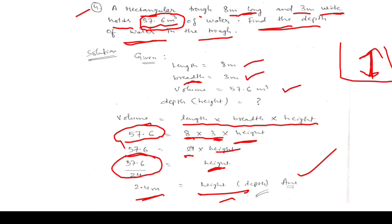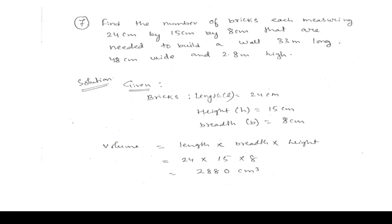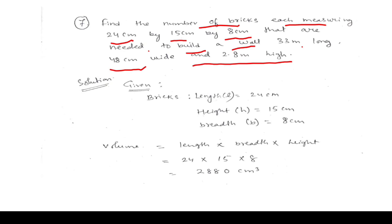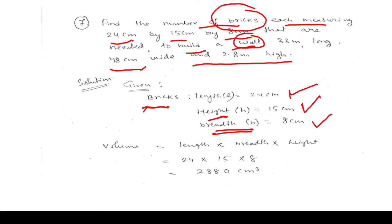Question 7: Find the number of bricks, each measuring 24 cm × 15 cm × 8 cm, needed to build a wall 33 m long, 48 cm wide, and 2.8 m high. To find the number of bricks, we need the volume of one brick and the volume of the wall. Volume of brick = 24 × 15 × 8 = 2880 cm³.